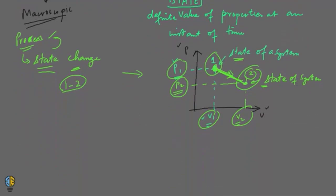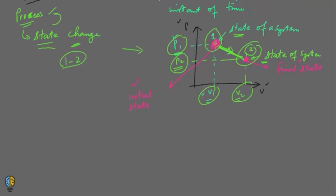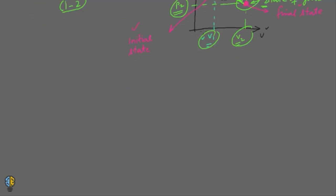Now let's talk about cycles. Looking at this diagram, state 1 is the initial state and state 2 is the final state. Whenever a process takes place, you will have an initial state and a final state. So what is the difference between a process and a cycle? Let me plot a P-V diagram, with V on the horizontal axis and P on the vertical axis.